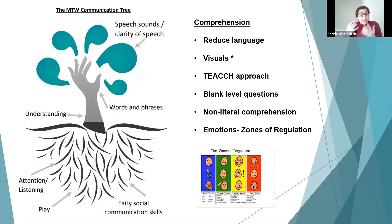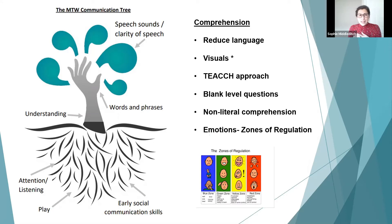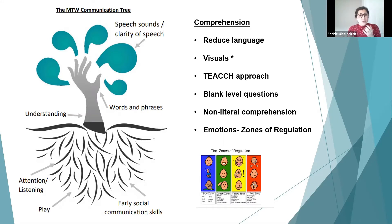If someone is really excited — in the yellow zone — and bouncing off the walls, they're probably not going to be able to do their work. They might need to do some jumping first to get the energy out and then come back to focus. It's about accepting and acknowledging where they are, and then what they can safely do to express that emotion. Often, with children I end up showing them where I think they are and modelling it — for example, showing them that I feel sad: 'I'm in blue — sad.'